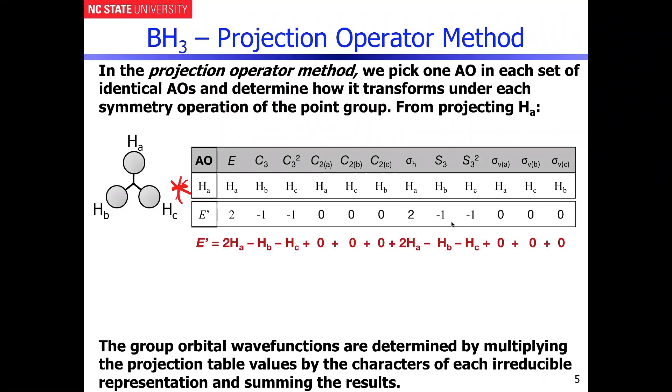Following through exactly what we were doing before, multiplying through HA times two gives you HA, then HB times minus one gives you minus HB, and HC times minus one is minus HC. Anytime you see zeros, the zeros are effectively carried through, and then this repeats itself again.